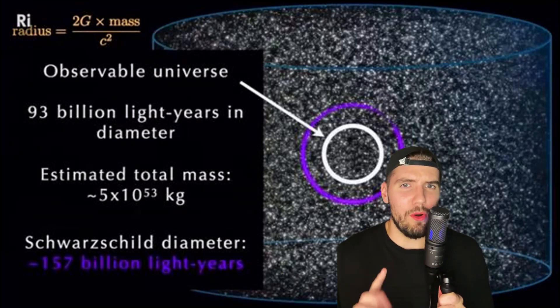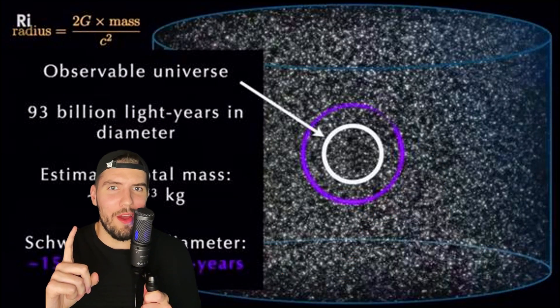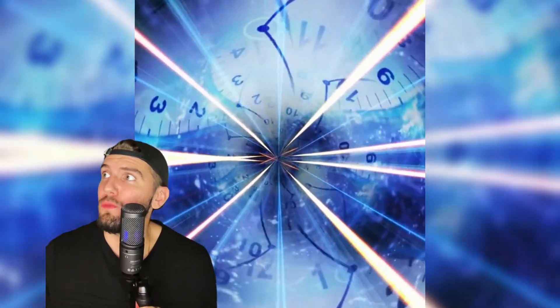Yo, am I tripping or are y'all seeing this? What is going on here? Do we live inside a humongous black hole? Do all other black holes contain entire universes inside them? Okay, no, run it back because we definitely messed up somewhere, right?